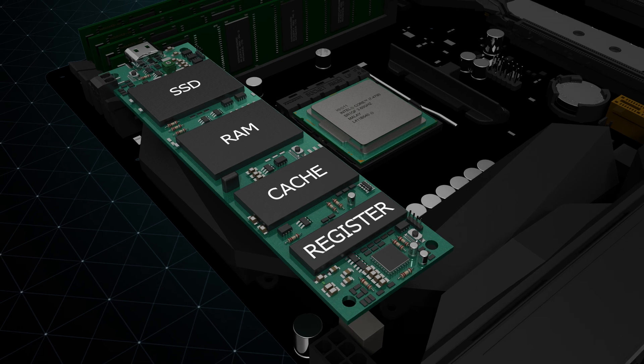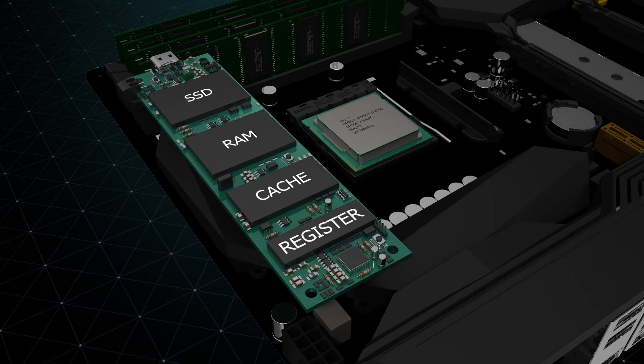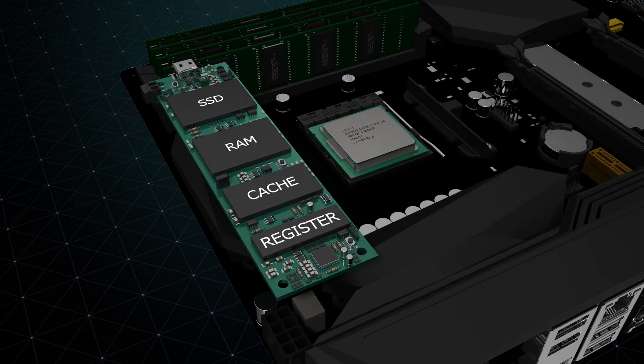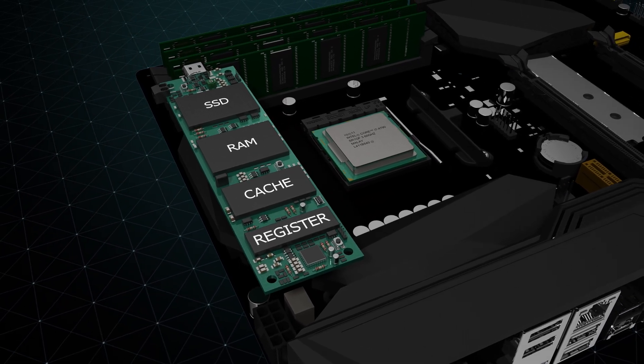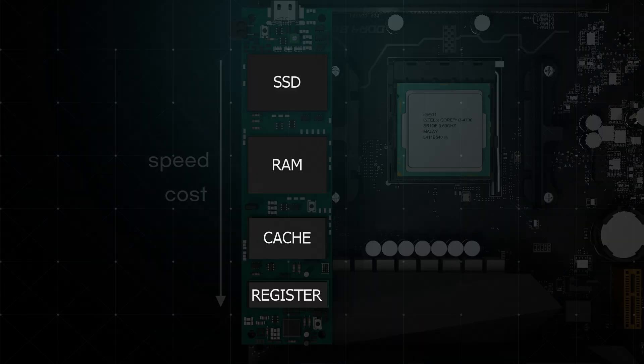The storage components of a computer include the hard disk, RAM, cache memory, and registers. Registers are temporary storage devices inside the CPU, and are the fastest type of memory. As you go down the hierarchy, the speed increases but the capacity decreases, and the cost goes up.